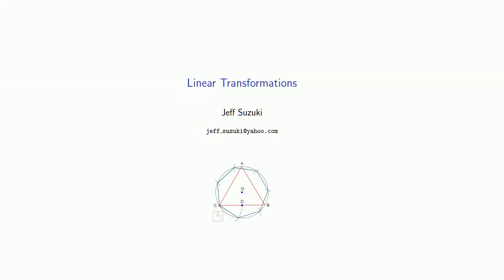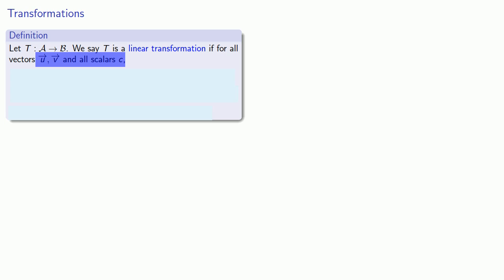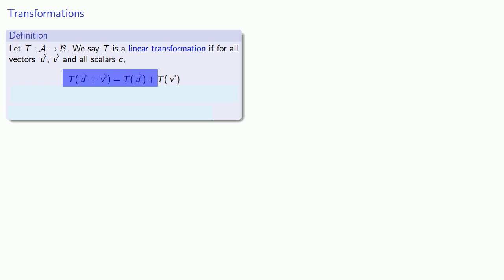One of the important uses of linear algebra is in what are called linear transformations. Suppose I have a function that takes things in some set A to some things in set B. We say that T is a linear transformation if for all vectors u and v and for all scalars C the following two statements are always true. First, whenever we apply T to the sum of two vectors u plus v, we get T applied to u plus T applied to v.